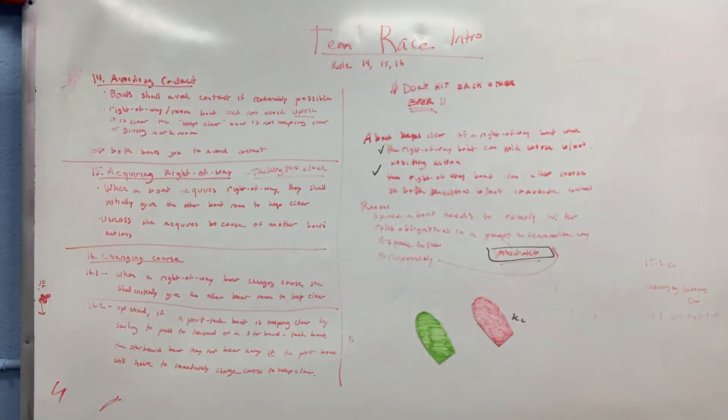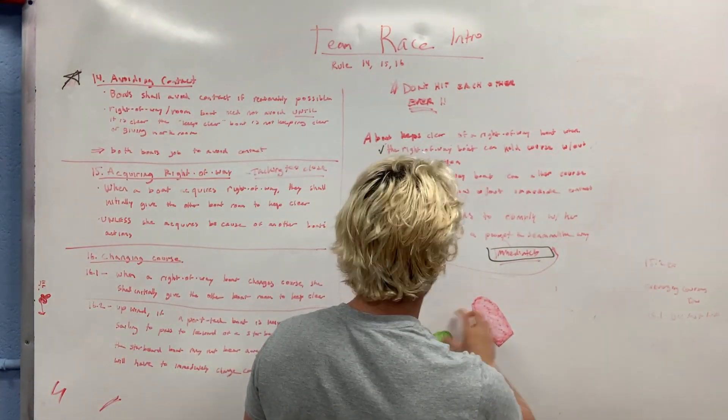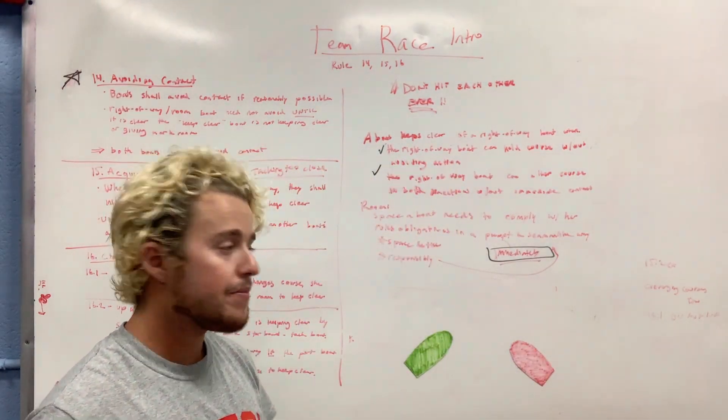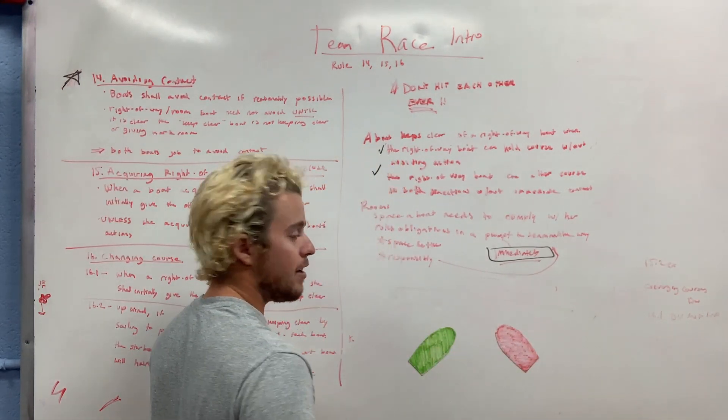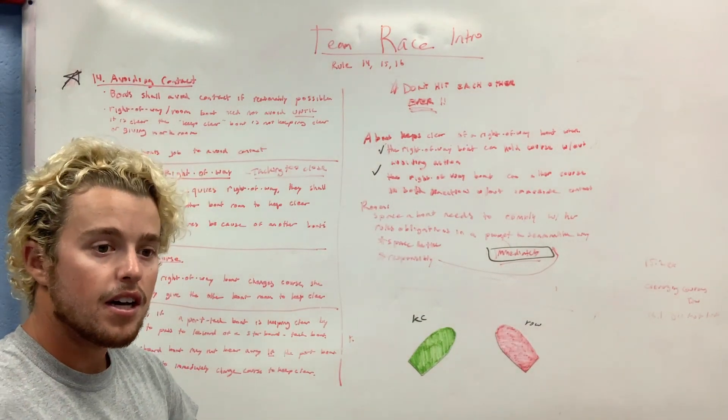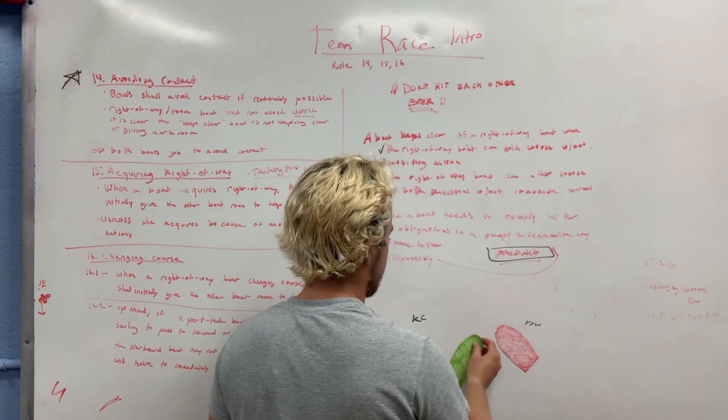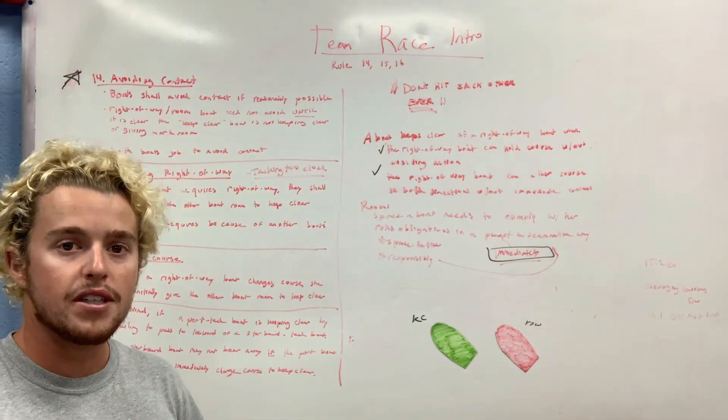So rule 14, the golden rule: avoiding contact. Boats shall avoid contact if reasonably possible. The right-of-way boat or the boat that has room does not need to do anything to avoid until it's clear that the keep clear boat is not keeping clear or not giving mark room. We're going upwind on convergent courses like this, coming together. The keep clear boat is the port boat, and this is the right-of-way boat. If the keep clear boat does their job, they will go down and duck, or they maybe could tack. No issues there. Everyone followed rule 14.